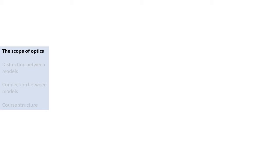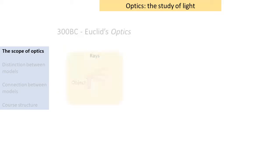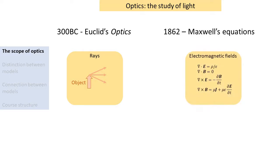Let's start with the question: what is optics? Optics is all about light. It's a very broad field of study, and its development spans multiple millennia. Ancient Greeks already came up with the ray model — that's a part of optics. Maxwell's theory of electromagnetism shows that light is an electromagnetic wave — that's part of optics as well. Both are part of optics, but they are completely different.